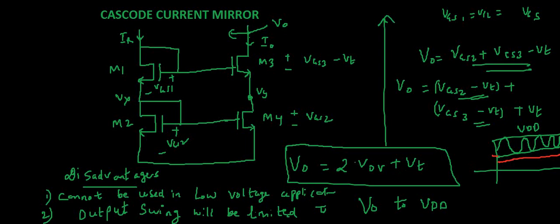So in the next circuit which we are going to study, that is improved cascode current mirror, which I would like to discuss in the next video, we can have output swing only limited to 2 VOV. In that case the output swing will be more than this cascode current mirror and also it can be used in low voltage applications.